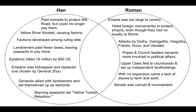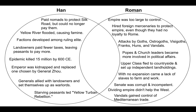We know that the senate was very corrupt and became incompetent. We know that even though the emperor had the best intentions when he split the empire into eastern and western, it did help the east because the east was prospering at the time. But by dividing the empire, the west really suffered.